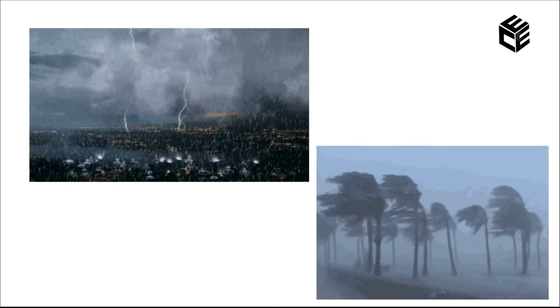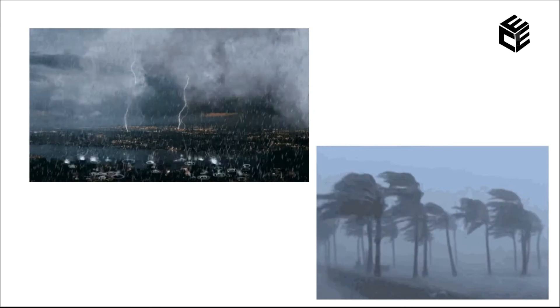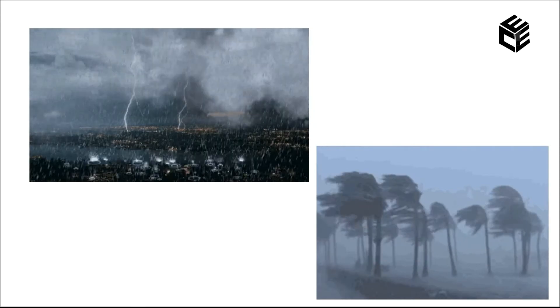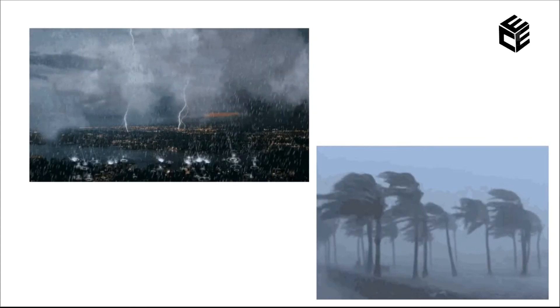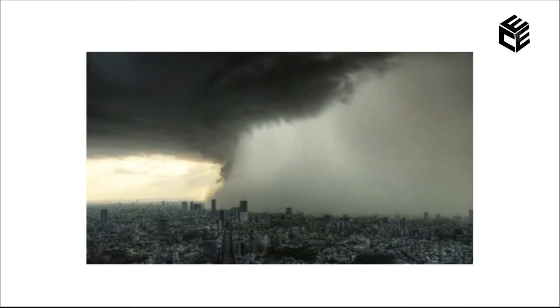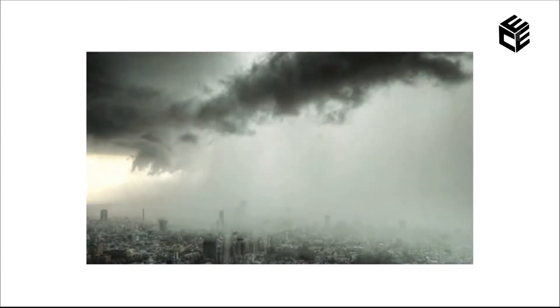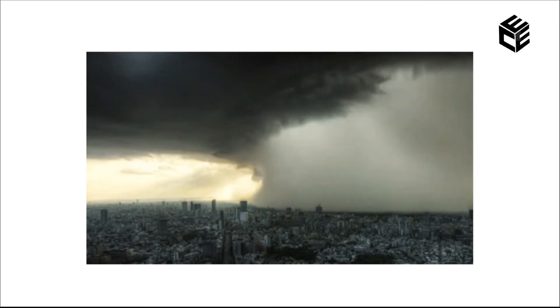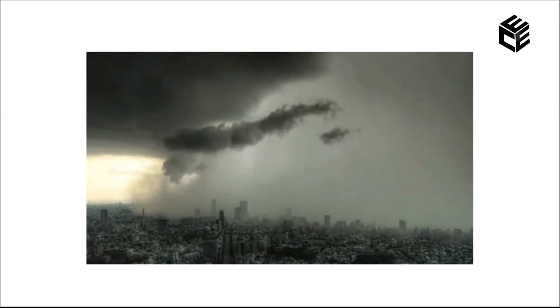Let's see this with an example. Suppose tomorrow's weather forecast is heavy rain and storm. Since we know this in advance, the best way to protect ourselves is to stay home — that is a feedforward system. But if the storm is completely out of control, we cannot control the disaster that is going to happen. That is the drawback of the feedforward system.